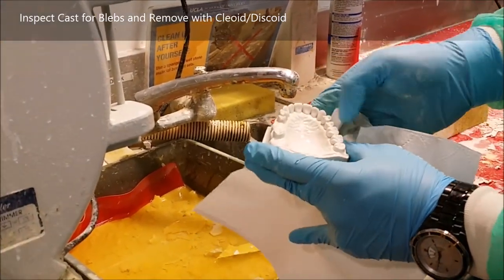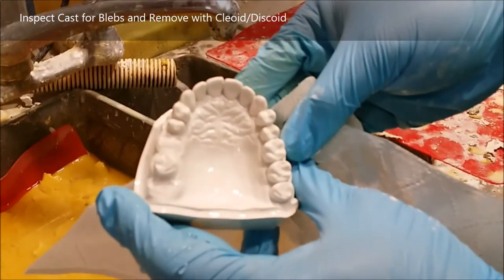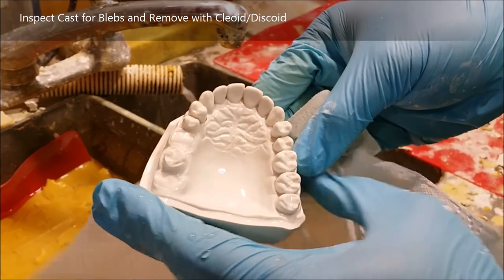After briefly drying the cast, you inspect it for any blebs or positive nodules on the cast. In this particular case luckily I didn't get too many, but if you do, you take a clear discord and you remove them.